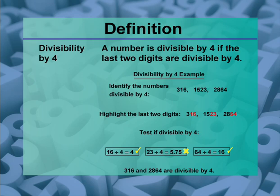Divisibility by 4 example. Identify the numbers divisible by 4: 316, 1523, 2864.